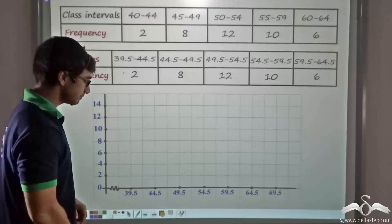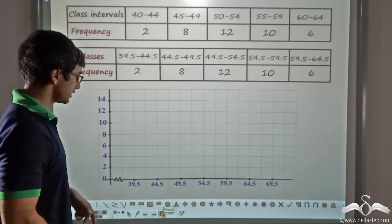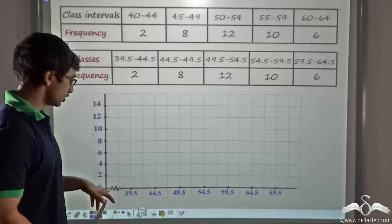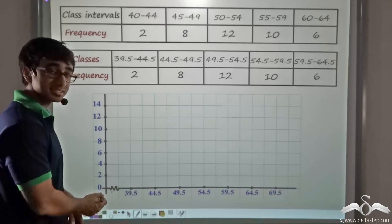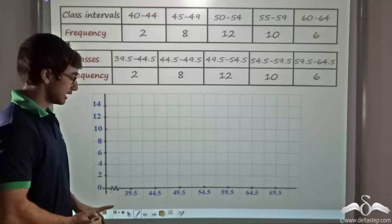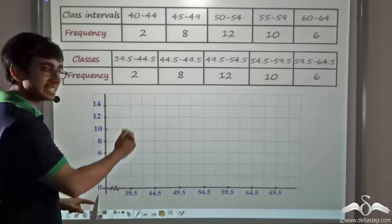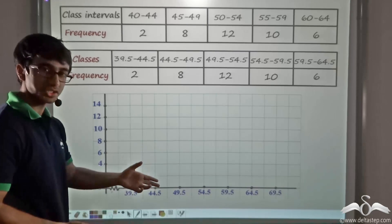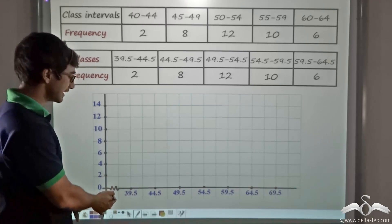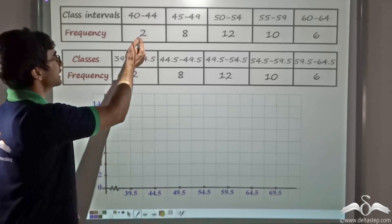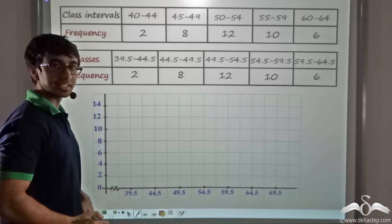Now we plot the histogram for the adjusted classes. On the x-axis you will notice a slight wave-like structure called a kink. The purpose of the kink is to tell readers that the scale on the x-axis does not start from 0 — instead it starts from 39.5. That is the purpose of keeping the kink.